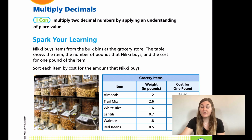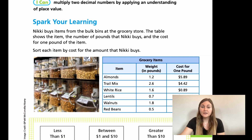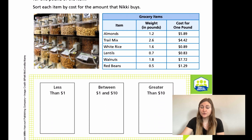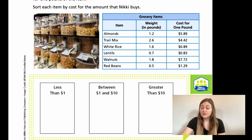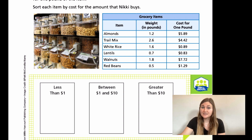Let's look at the first one. We have almonds. She's buying 1.2 pounds, and the cost per pound is $5.89. She's only buying 1.2 pounds, so it's going to be pretty close to that $5. We know fairly certainly that it's going to be between the $1 and $10 range. So we're going to put almonds in that second box.